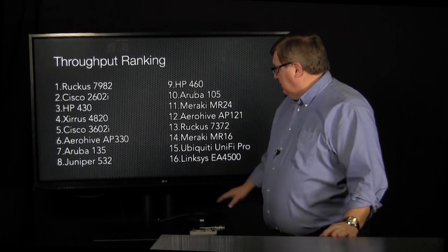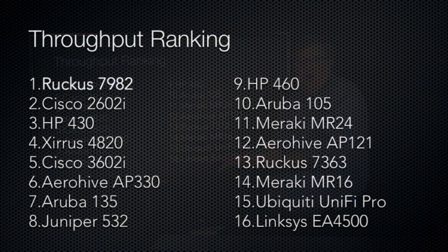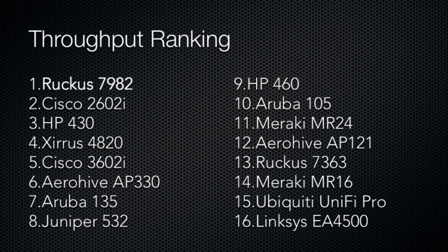Now, on to the ranking. First, throughput ranking. This was who could send the most amount of data via FTP, up and down, and iPerf. And here you have the rankings. We have high and low. As you'd expect, a Soho device down there at the bottom.